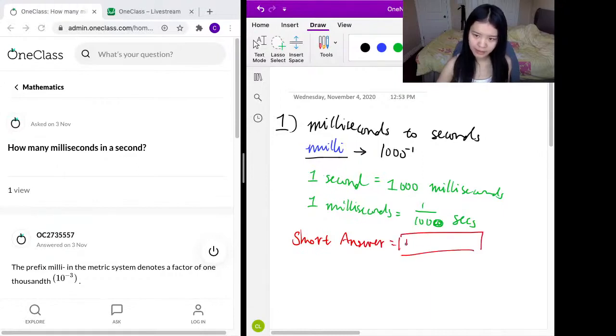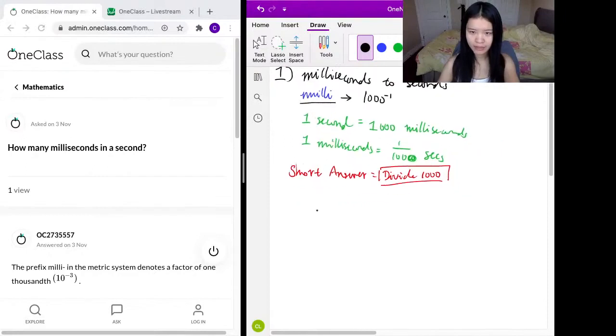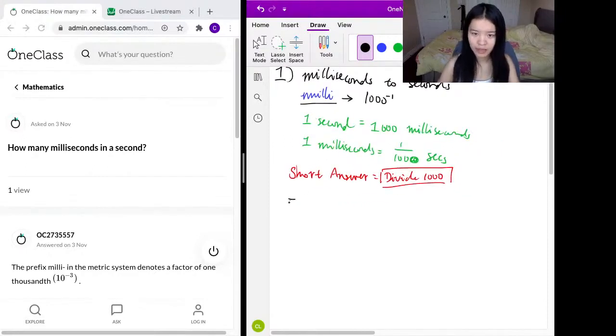Divide a thousand. Now, let's look at an example. Say you want to convert thirteen hundred milliseconds to seconds. How would you do that?